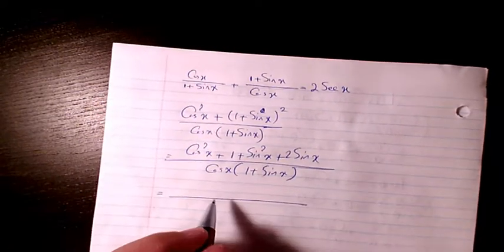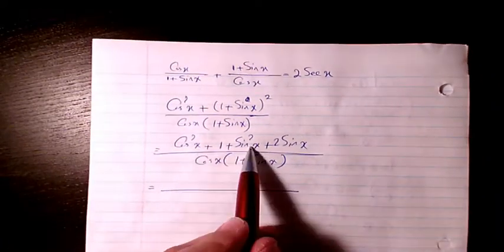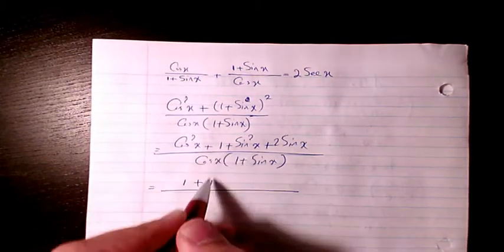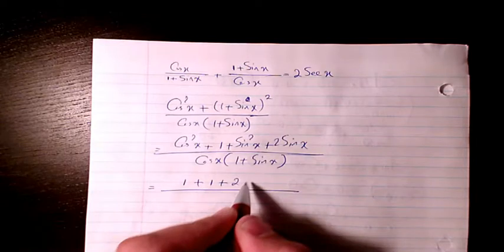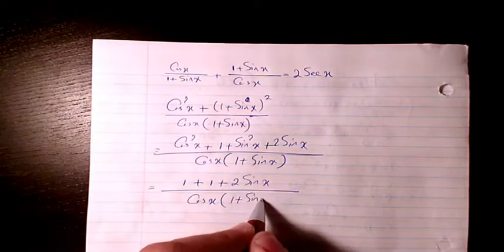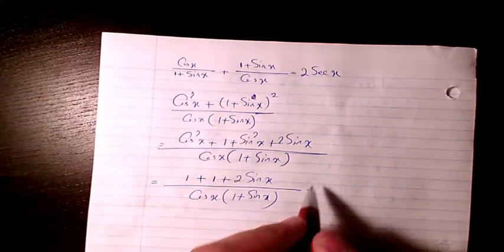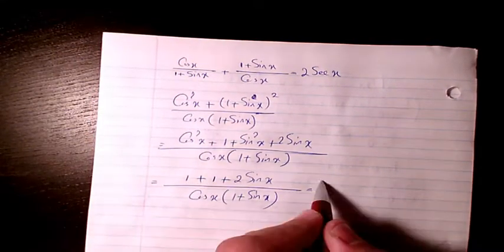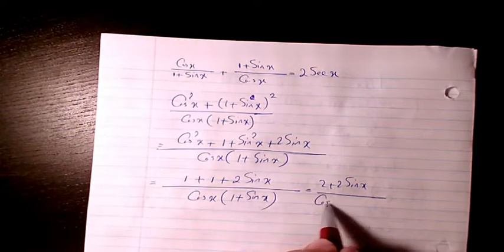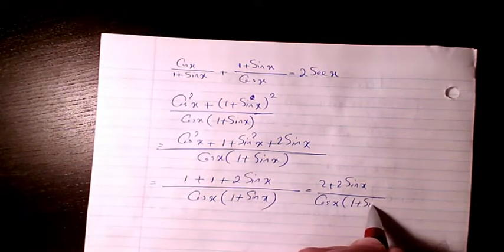Then as you see here, cosine squared plus sine squared is going to be 1, and we have another 1 here, so it's going to be 2 plus 2 sine x. Here we have cosine x times 1 plus sine x.